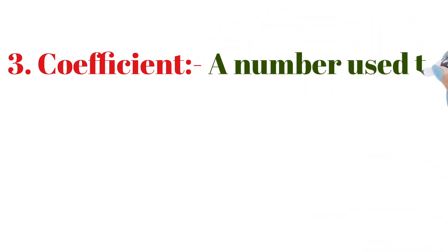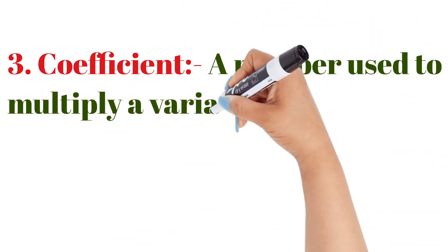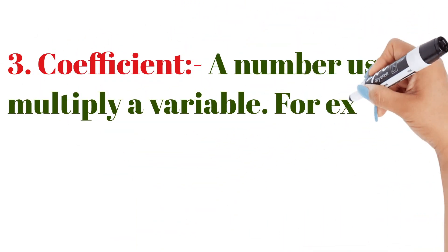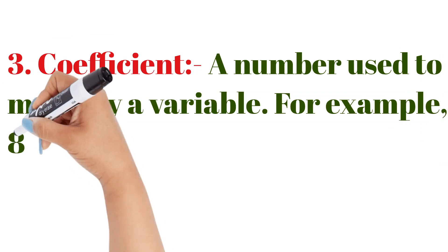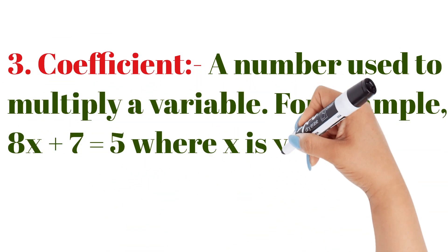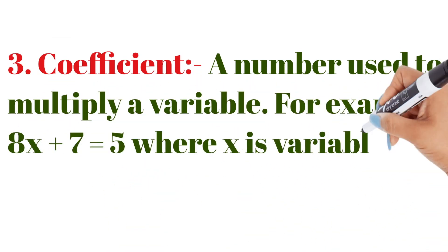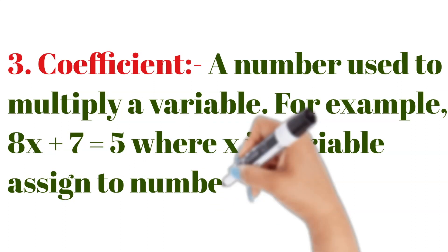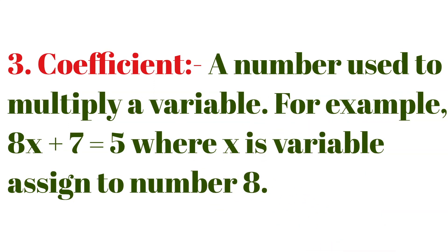A number used to multiply a variable is called a coefficient. For example, in 8x + 7 = 5, x is the variable and its coefficient is 8. So the coefficient of x is 8. I hope that is clear.